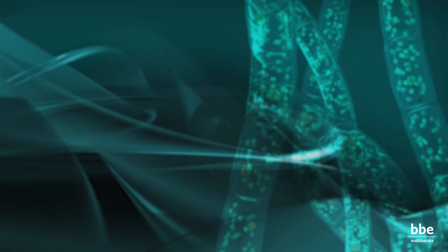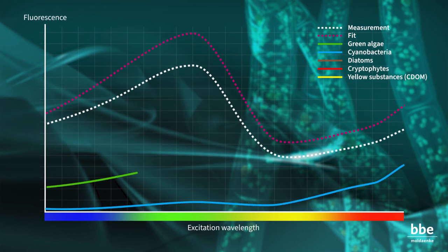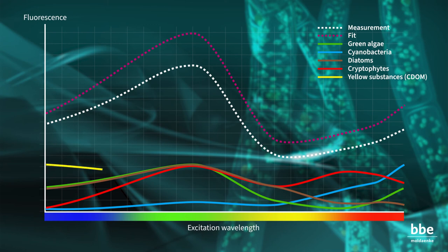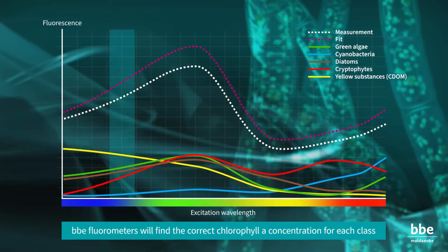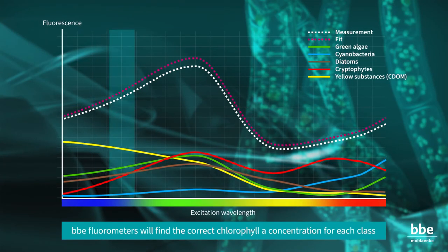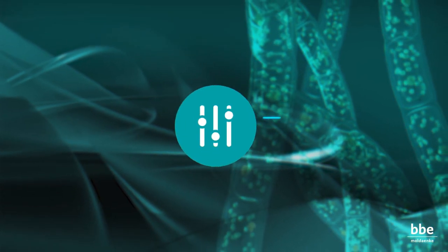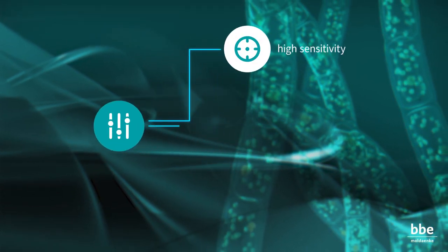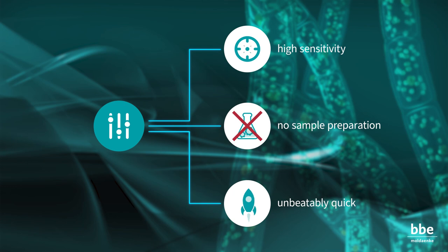A sample taken from a water body will probably contain a mixture of different algae classes. Using the norm spectra of all classes and the yellow substances, the BBE fluorometers will find the correct chlorophyll A concentration for each class. The method has a high sensitivity, needs no sample preparation, and is unbeatably quick.